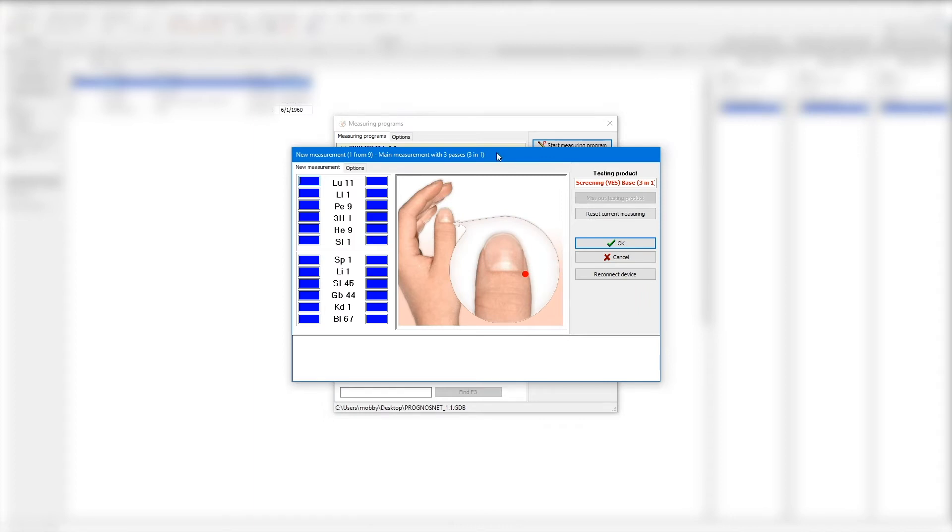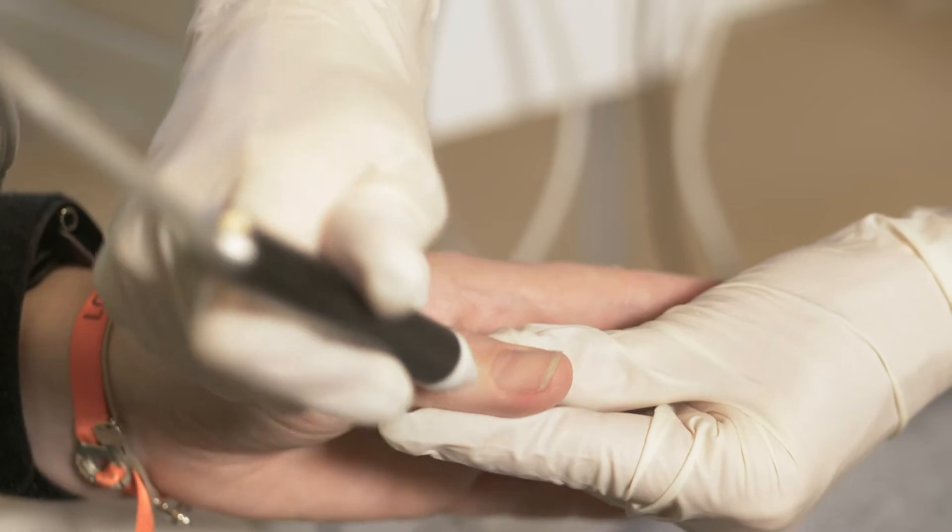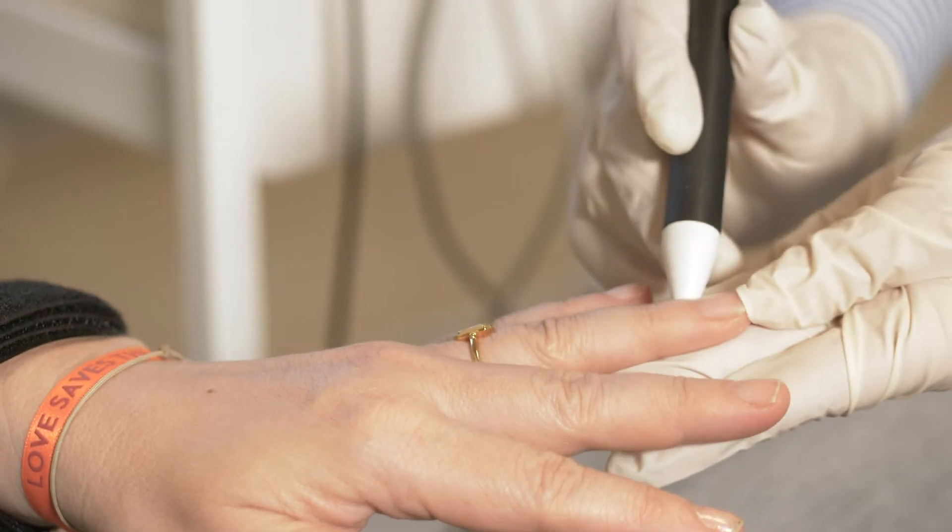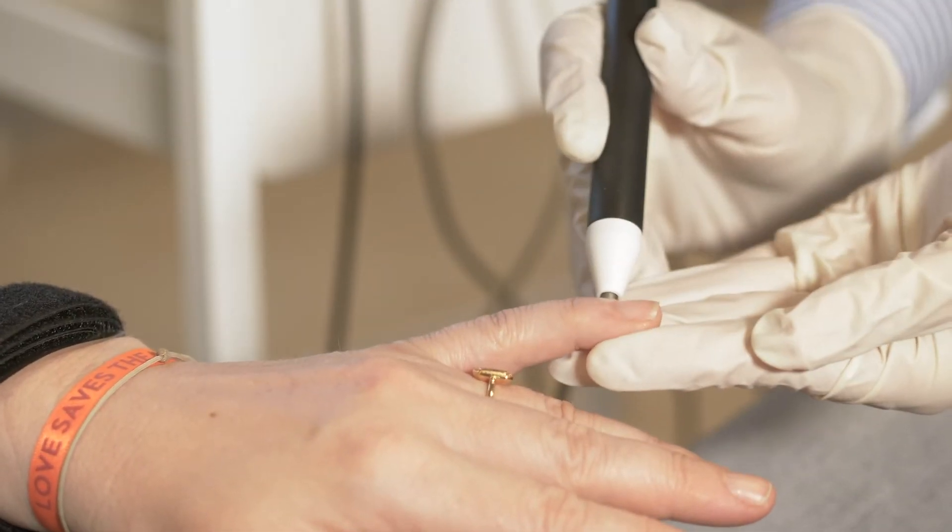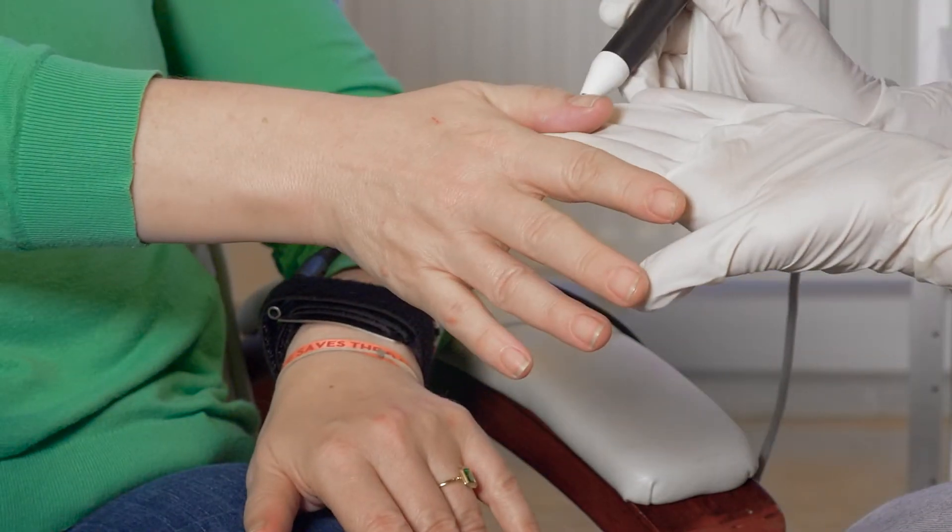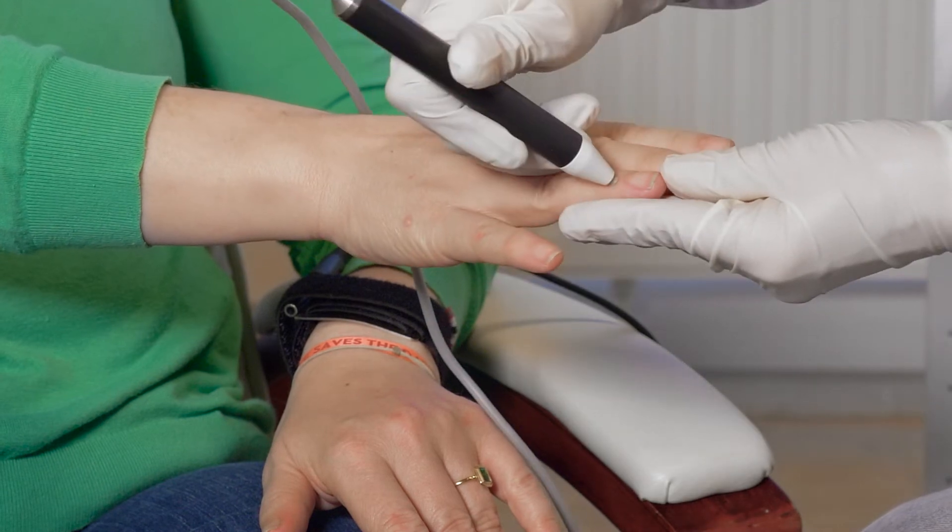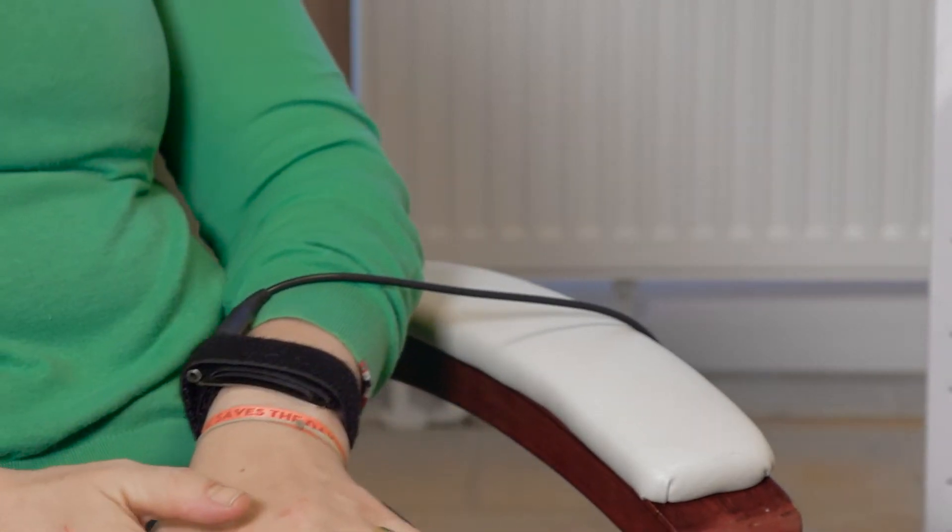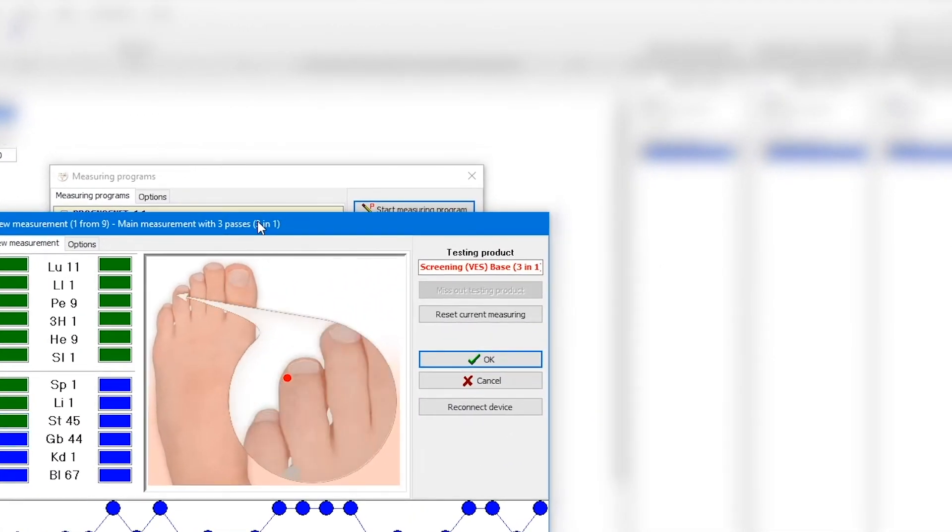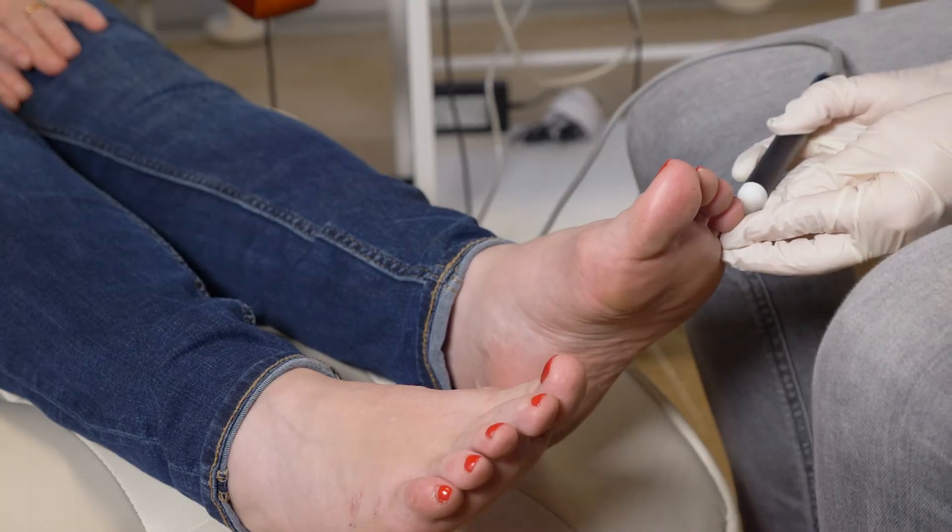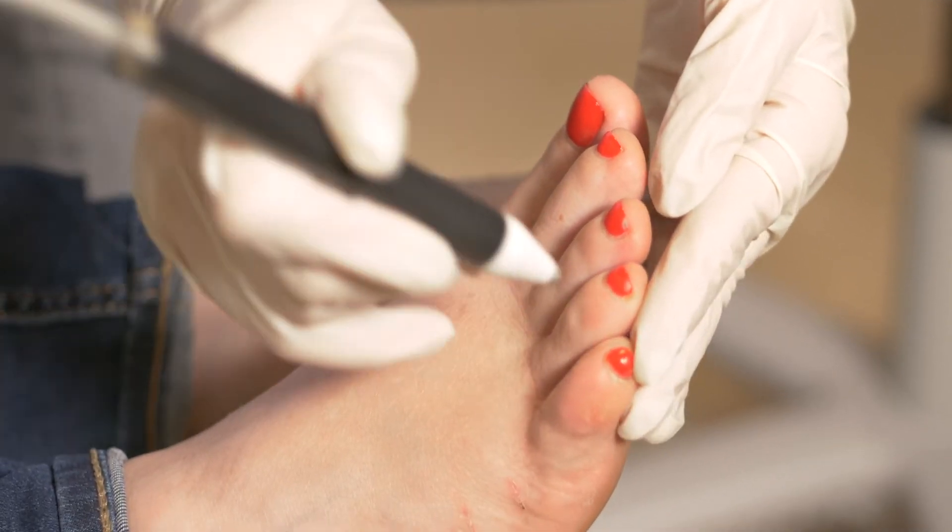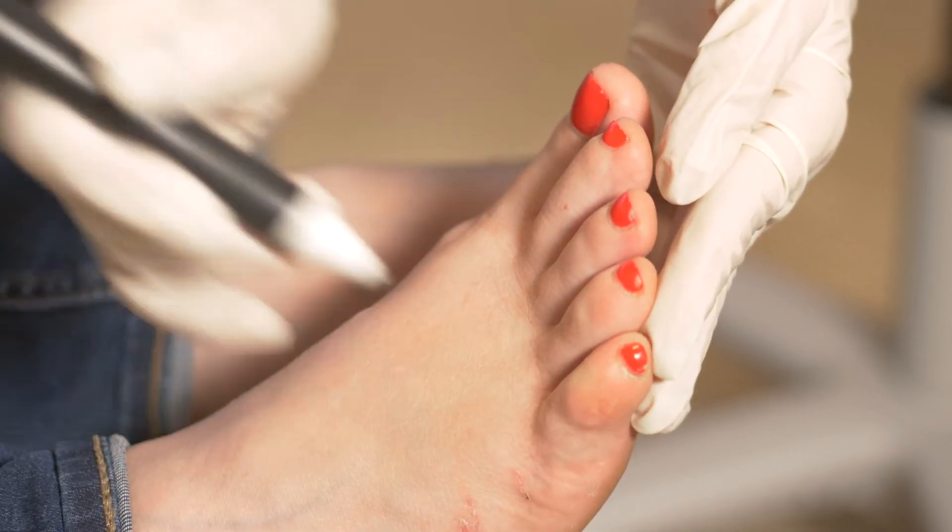Starting with the left thumb acupuncture point lung 11. Then the other acupuncture points on fingers and toes follow. You can prove if you are measuring the right finger or toe at any time during the measurements. Therefore, just have a look on the screen and see the finger or toe symbols with a red dot in the right position. To transfer the signals in the Meridian system, headphones are needed. The measurement procedure starts from the beginning.